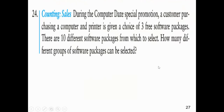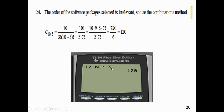At a computer desk, a special promotion gives customers who purchase a computer and printer a choice of three software packages out of ten. When you walk out of the store, it doesn't matter which order those three free software packages are under your arm — you've got three free packages and you don't care about the order. The phrase 'how many different groups' gives it away — it's a combination. So it's 10 things taken 3 at a time. It's so much easier to use the calculator than work through the formula.